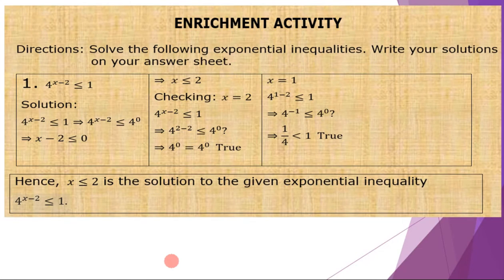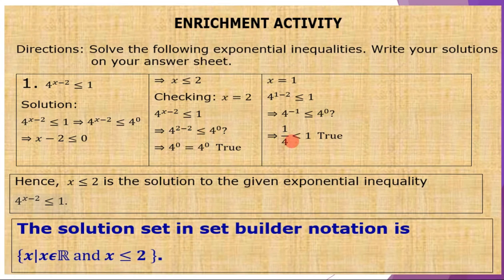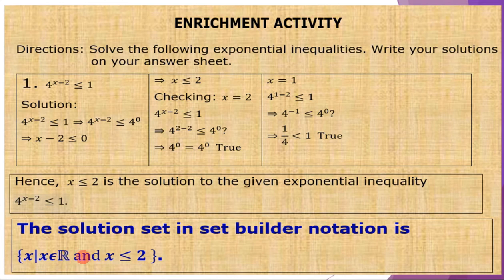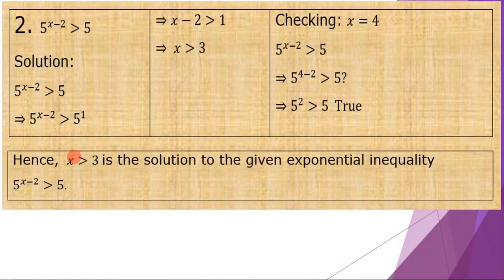For the next exercise, number one: the solution set is X less than or equal to 2. The solution set in set builder notation is the set of all X's such that X is an element of the real numbers and X is less than or equal to 2. Number two: the solution set is X greater than 3.